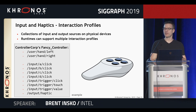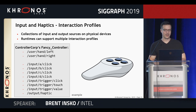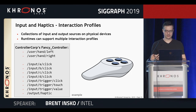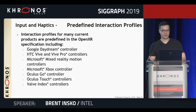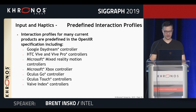We provide in the core API a series of interaction profiles — collections of input and output sources on physical devices. Runtimes can support multiples of these. For example, you can have a controller used for the left and right hand with four click buttons, a trigger that you can click, touch, or squeeze for a value from zero to one, and haptic feedback output. We've already predefined interaction profiles for current products: Daydream, Vive and Vive Pro, Microsoft Mixed Reality controllers, Xbox controller, Oculus Go and Touch controllers, and the Valve Index controllers.